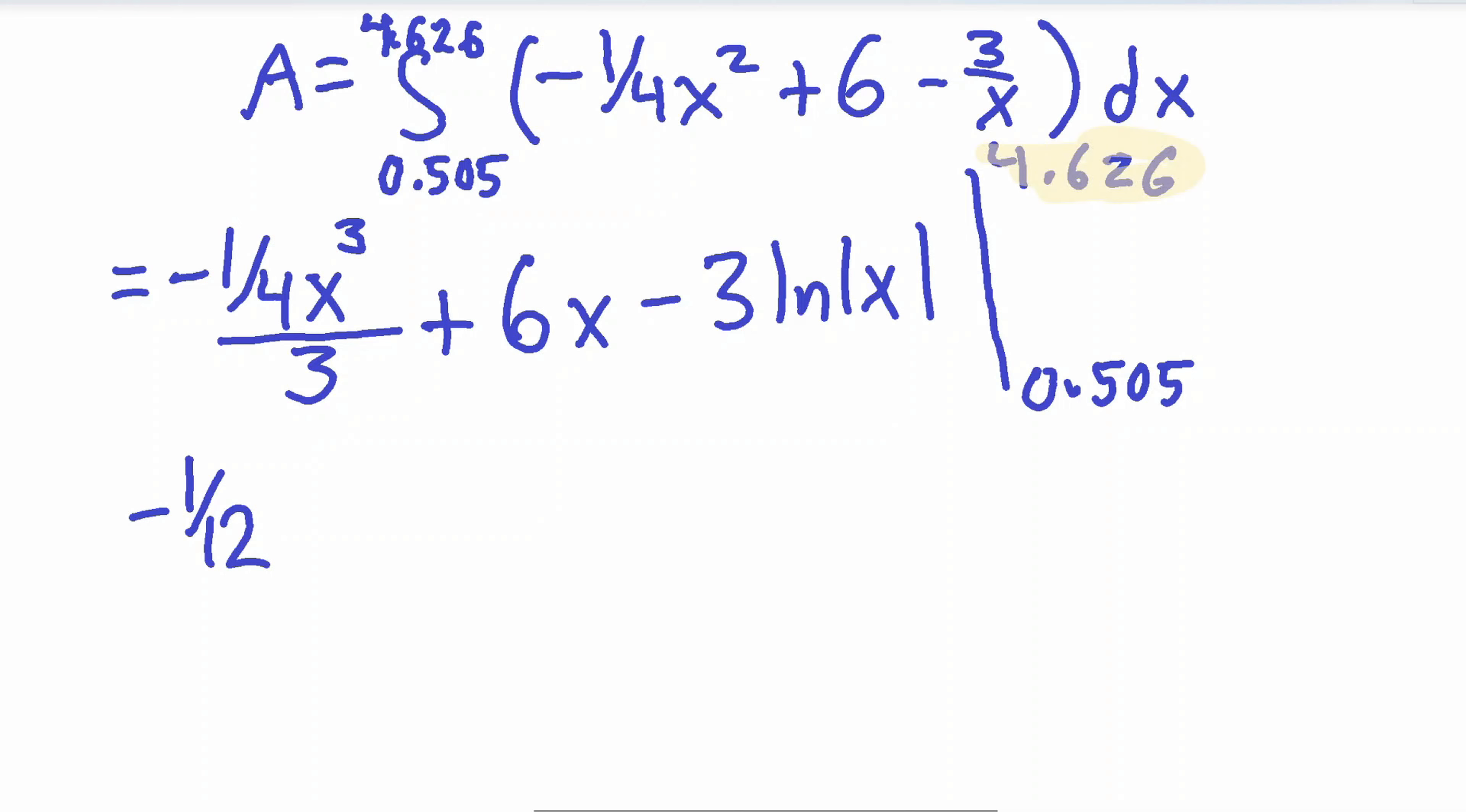And now what do we do? So now we plug in the 4.626, our top value, and we plug in our bottom value, and then we subtract them by each other. We plug them into this integralized equation. So let's plug in the 4.626 first. Oops, so this negative 1/4/3 is negative 1/12, so we plug in for X. So this 4.626 goes into the X, that's cubed, plus 6 times the X, the X is 4.626, minus 3 ln of 4.626.